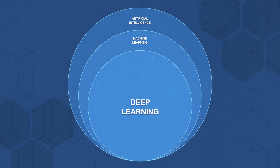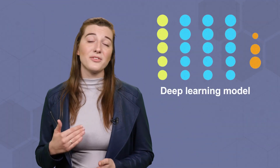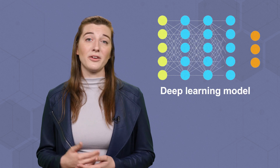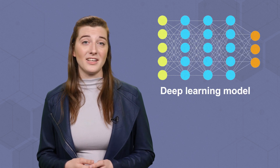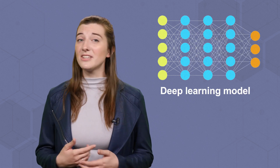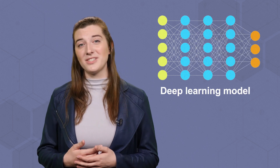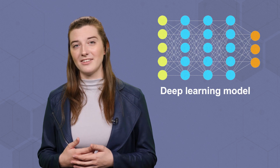Deep learning is a subset of machine learning. It uses layers of neural networks for information processing, with each layer learning increasingly complex representations of data.